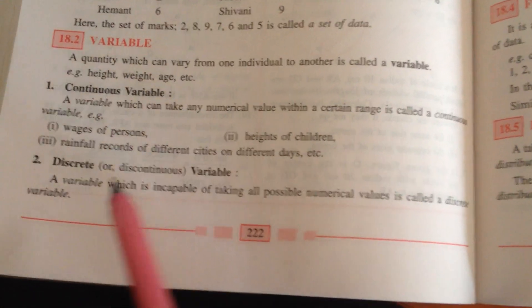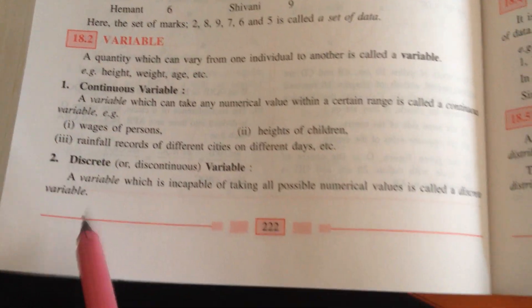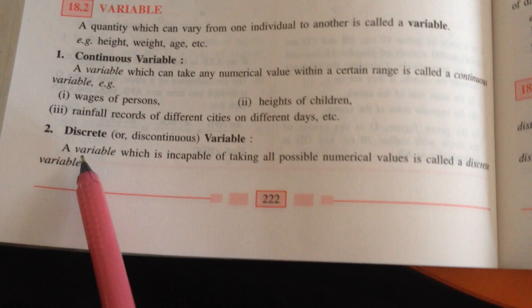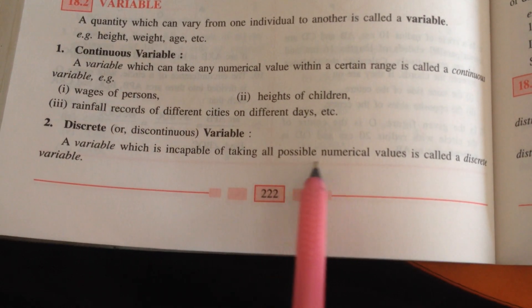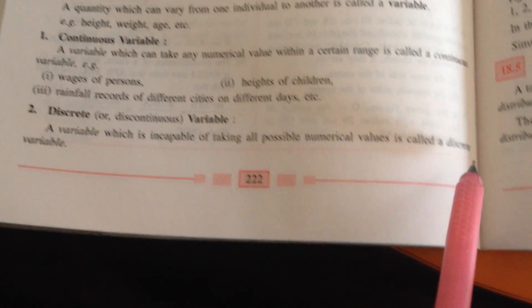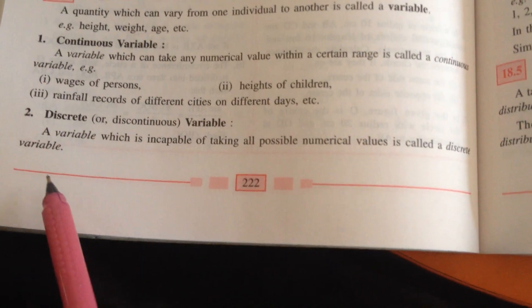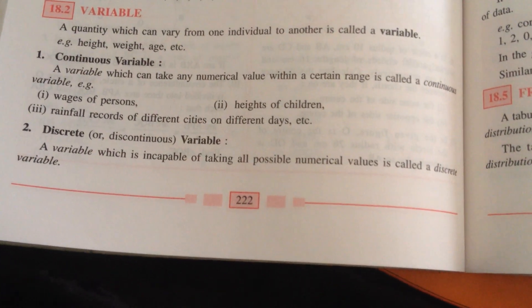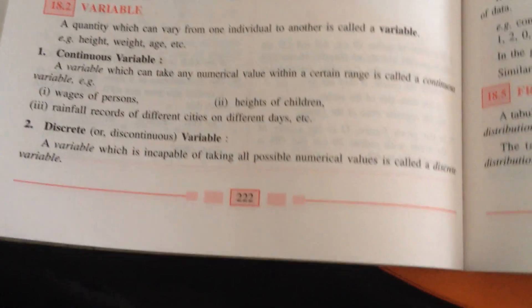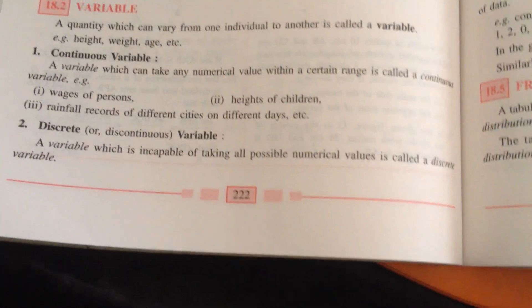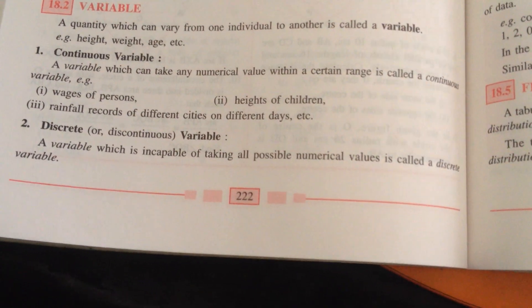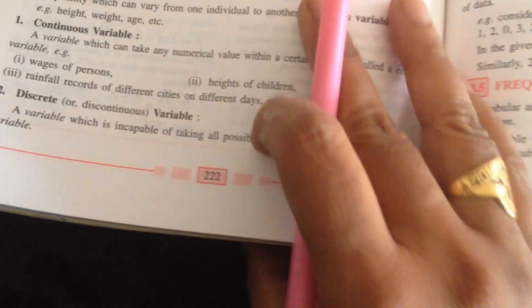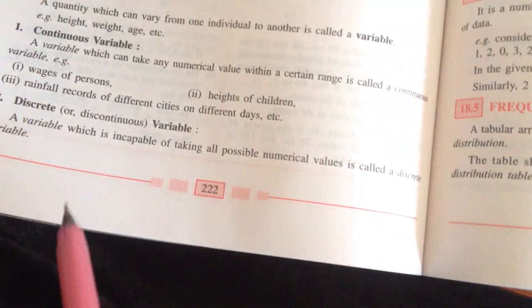That is known as continuous variable. Then discontinuous or discrete variable: a variable which is incapable of taking all possible numerical values is called discrete variable. For example, number of children in a family. If your family is small then two children can be there. If your family is joint family, number of children may be increased. That type of data is discrete variable.